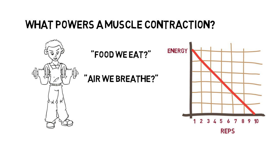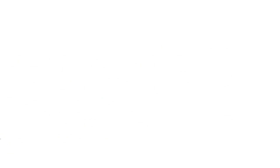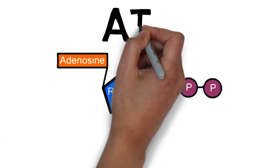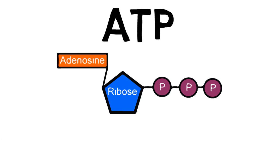A muscle contraction requires the muscle cells to have energy. In our bodies, this energy is stored in a specific molecule called adenosine triphosphate, or ATP.